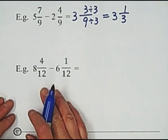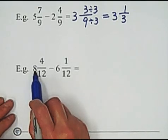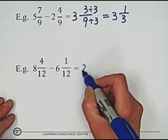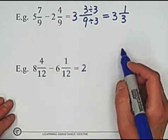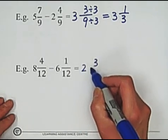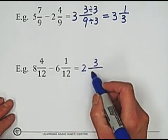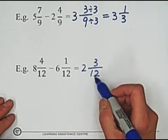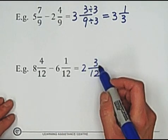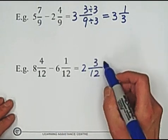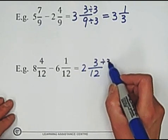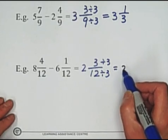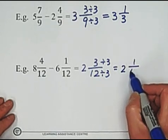The second example. 8 minus 6 whole number portion, subtract it, we got 2. Subtract numerators, 3. Keep denominator unchanged. And 3 over 12 is a fraction, but still can be simplified. So by dividing 3 to the top and bottom, we got 2 and 1 over 4.